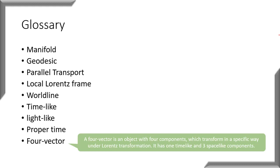Another concept is the four-vector. A four-vector is an object with four components which transform in a specific way under the Lorentz transformation in special relativity. A four-vector has one time-like component and three space-like components. For example, the position four-vector has components x, y, z and the time-like component ct. Similarly, we have a momentum four-vector and others — all with three space-like and one time-like component.